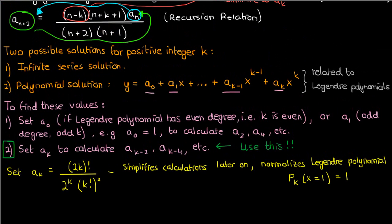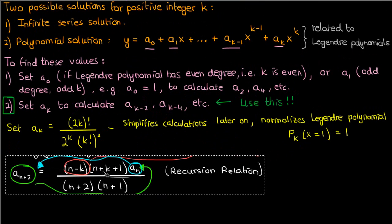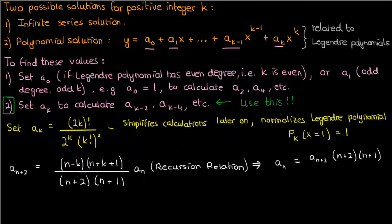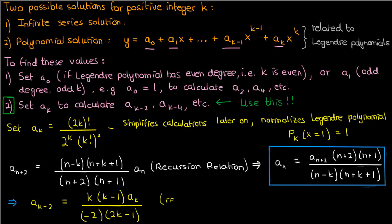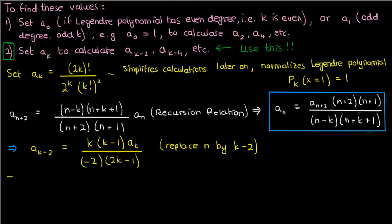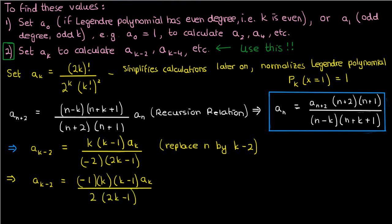Since we want to express the coefficients below a_k in terms of a_k, it's recommended to rewrite the recursion relation as a_n in terms of a_{n+2}. Using this relation, we can write a_{k-2} in terms of a_k by replacing n with k minus 2. Simplifying gives: negative 1 times k times k minus 1 times a_k, divided by 2 times 2k minus 1.